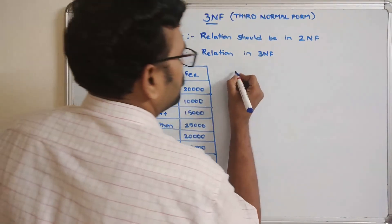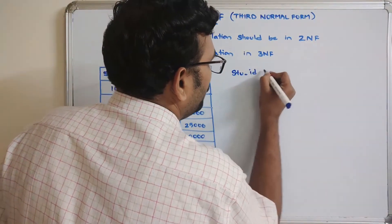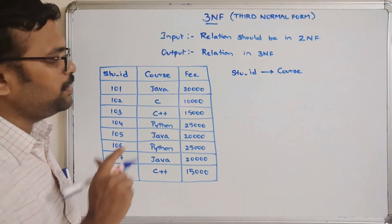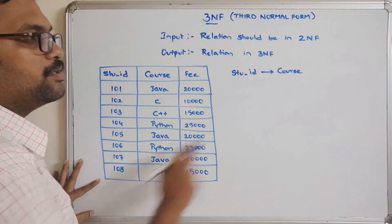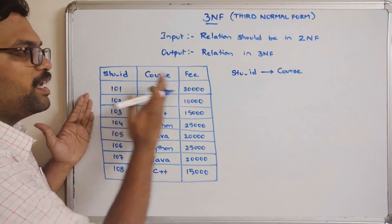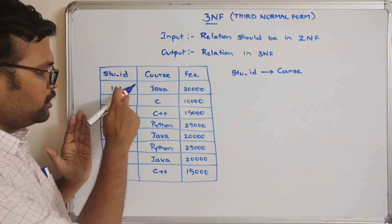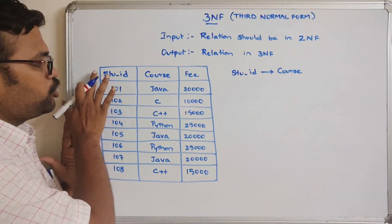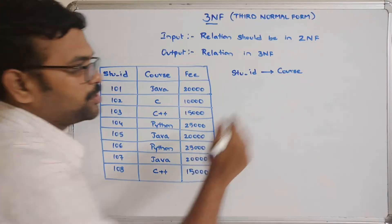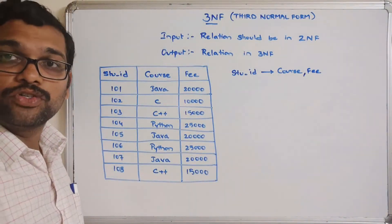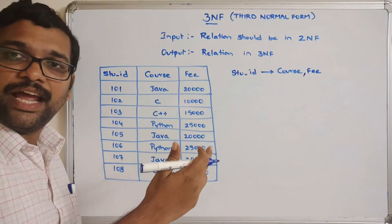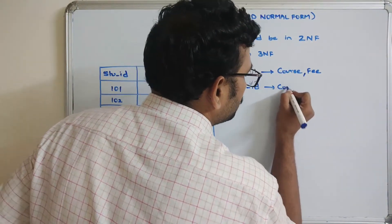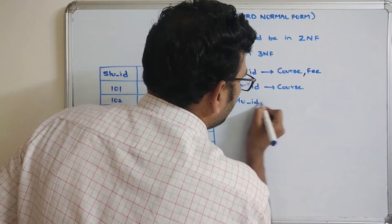Observe the functional dependencies. Student ID → course is a valid functional dependency. Since student ID is unique — 1, 2, 3, 4, 5, 6, 7, 8 — by knowing student ID we can get all details of remaining columns. So student ID determines both course and fee: student ID → course and student ID → fee.